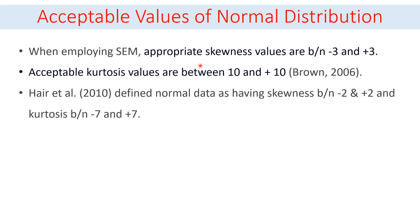Let us see some acceptable values for normally distributed data. When using structural equation modeling, appropriate skewness values are between minus 3 and plus 3, and acceptable kurtosis values are between minus 10 and plus 10, according to Brown. Other authors define normal data as having skewness between minus 2 and plus 2, and kurtosis between minus 7 and plus 7. Different authors suggest different ranges depending on the application.